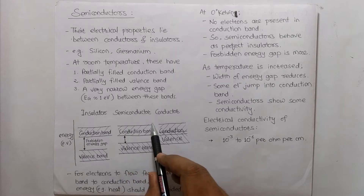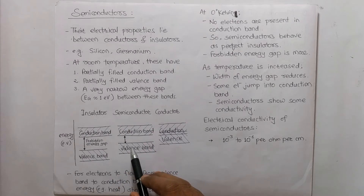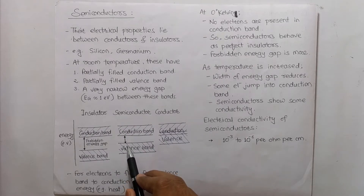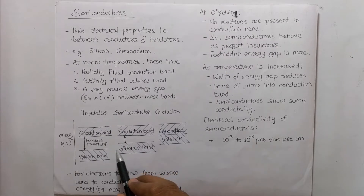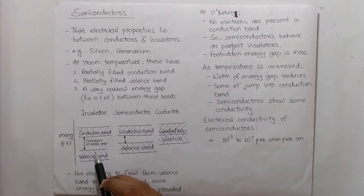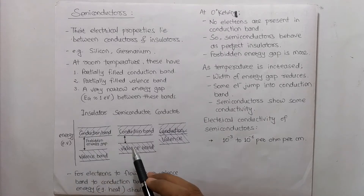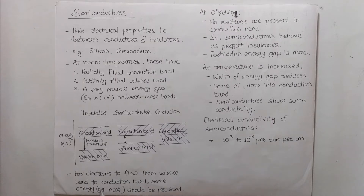Semiconductors comparatively have a lesser property of conduction, and insulators have very little property of conducting electricity. For electrons to flow from the valence band to the conduction band, some energy — in the form of heat — must be provided.